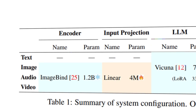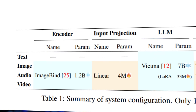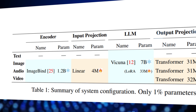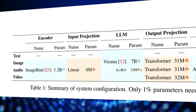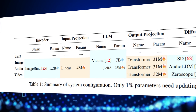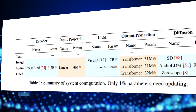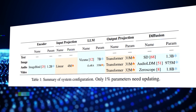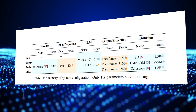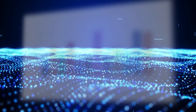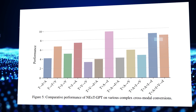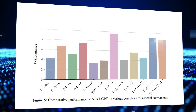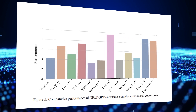NextGPT is tuned with only a small amount of parameters — just 1% — of certain projection layers. This means it can leverage existing, well-trained, highly-performing encoders and decoders without having to retrain them from scratch. This not only benefits low-cost training, but also facilitates convenient expansion to more potential modalities in the future.